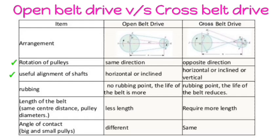Rubbing: no rubbing, so greater life, while cross belt has rubbing, so less life. Length of belt is less, while that in cross belt, it is high. Angle of contact is different, while in cross belt, it is the same.